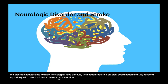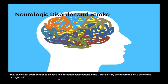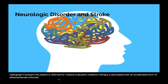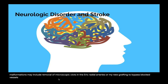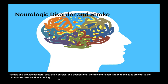Calcifications in the carotid artery are observable on a panoramic radiograph. If present, the patient is referred for medical evaluation. Radiation therapy is associated with an accelerated form of atherosclerosis and risk of stroke. Medical treatment includes surgical correction of aneurysms, clots, or malformations, which may include removal of microscopic clots in the intracranial arteries or grafting to bypass blocked vessels and provide collateral circulation. Physical and occupational therapy and rehabilitation techniques are vital to the patient's recovery and functioning. Careful recording of the medical history includes the listing of medications.